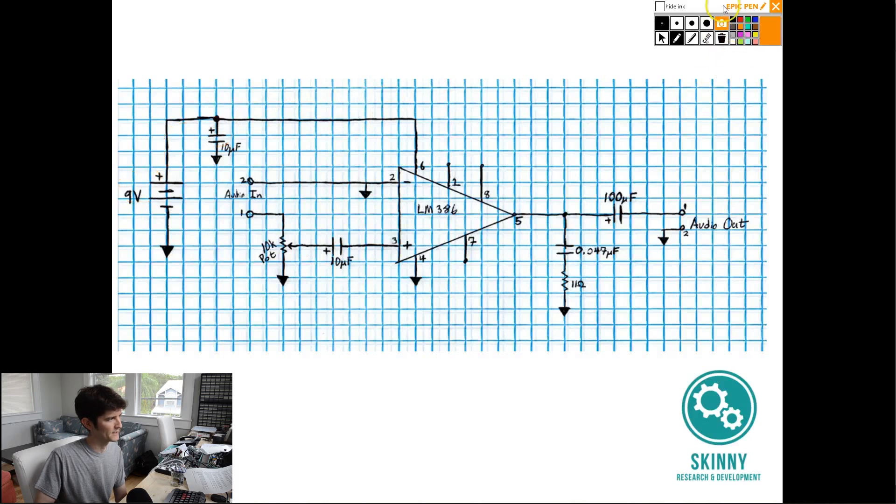The thing about a capacitor is it does two things. One, it blocks DC voltage. So this DC voltage from the battery, it's not going to go to ground because this capacitor will be blocking it. The other thing that a capacitor does is AC voltage, that interference that might be in the form of some kind of waveform, it'll short that to ground. So if there's any of this AC voltage on the line, it'll take it and just short it straight to ground.